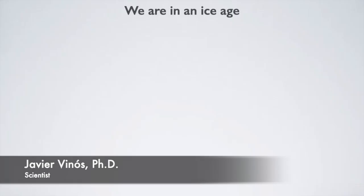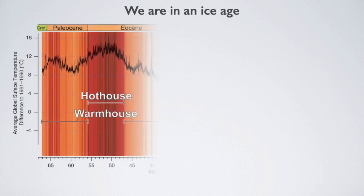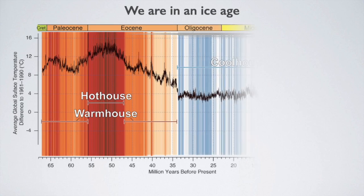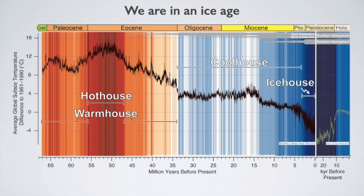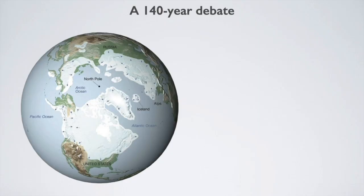To have a glacial cycle, you first have to be in an ice age. For unknown reasons, the Earth has been cooling for the last 50 million years, and 34 million years ago we entered an ice age when Antarctica froze over. The cooling has continued, and 5 million years ago the ice age became bipolar when Greenland froze over. With two of the Earth's largest continents reaching into the Arctic, the climate became extremely sensitive to small variations in the Earth's orbit caused by the gravity of the Sun, Moon and planets. The glacial cycle then appeared.